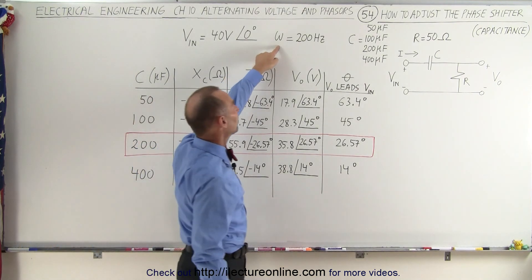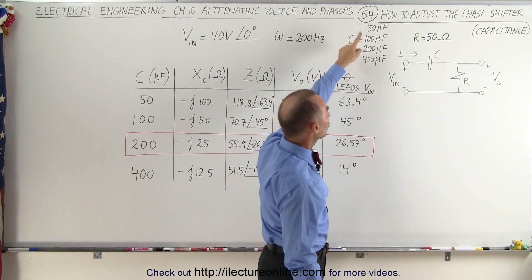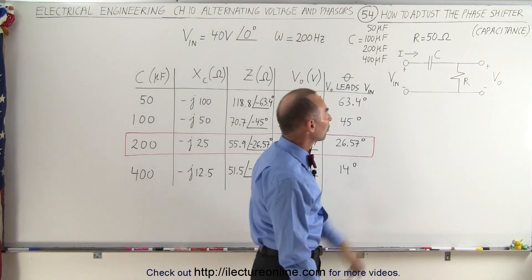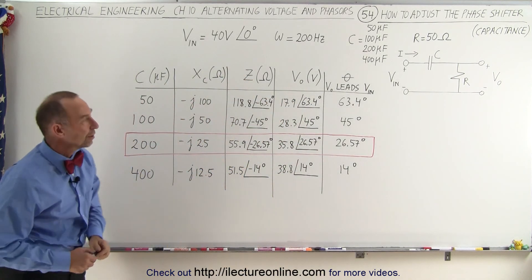So we're going to keep the frequency the same at 200 hertz, this is angular frequency, but we're going to change the value of the capacitor. The resistor also remains constant, the input voltage at 40 volts with a zero degrees phase shift.